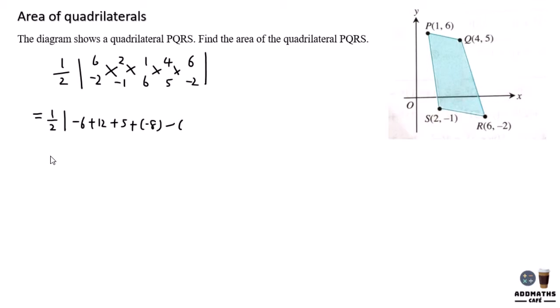So negative negative 4, negative negative 1, negative 24, negative 30, and close with modulus.